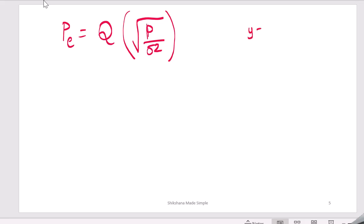So we had y = x + n. What is the SNR? SNR is signal power divided by noise power, which is modulus of x squared divided by modulus of n squared, which is actually P by sigma square. So we can write this as Q of SNR.